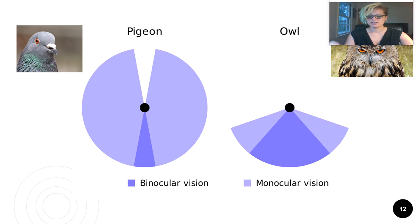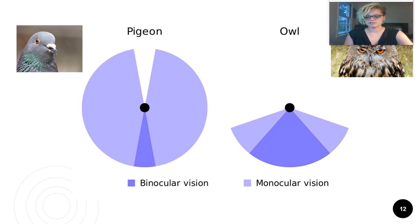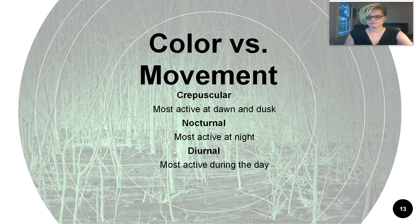Here are some examples of avian visual fields. The pigeon, with eyes set on either side of the head, has a much larger visual field but a much smaller proportion devoted to binocular vision compared to the owl, which has eyes set on the front of the head. As prey, pigeons need to be able to scan for movement more than they need to see well directly in front of them. As predators of small animals, owls need good depth perception to swoop in and snag their prey.